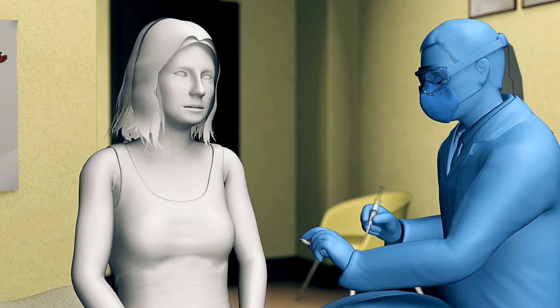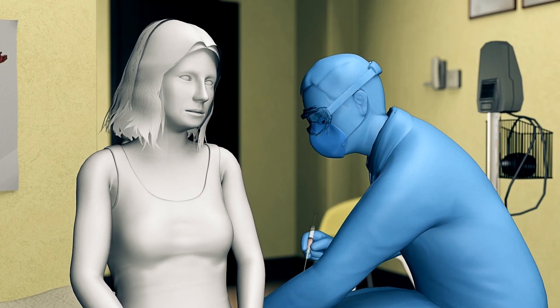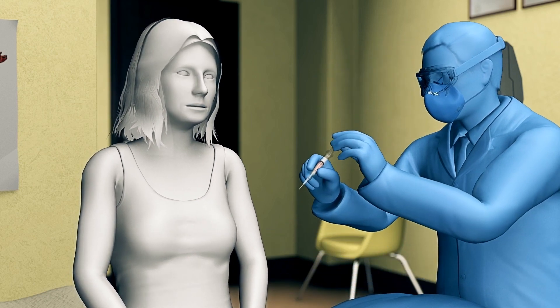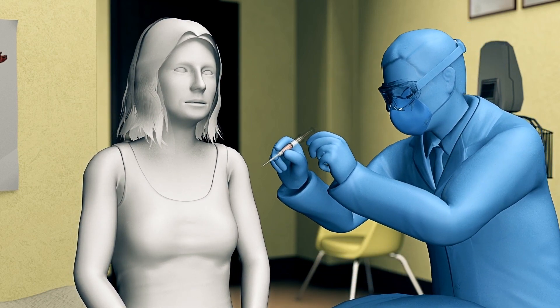A U.S. volunteer became the first person to receive an experimental COVID-19 vaccine as part of the first phase of human trials on March 16, the Associated Press reports.